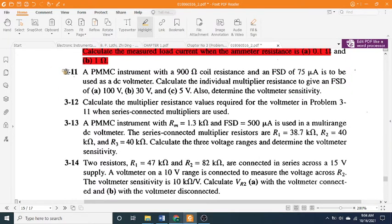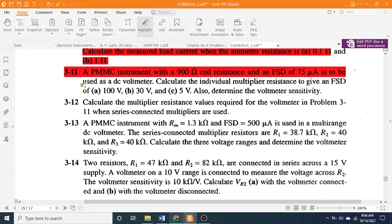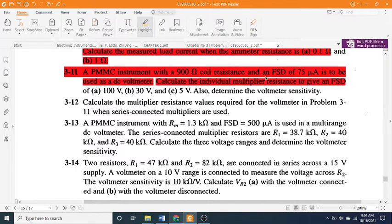3-11: A PMMC instrument with a 900 Ω coil resistance and an FSD of 75 μA is to be used as a DC voltmeter. Calculate the individual multiplier resistance to give an FSD of (a) 100 V, (b) 30 V, and (c) 5 V. Also, determine the voltmeter's sensitivity.